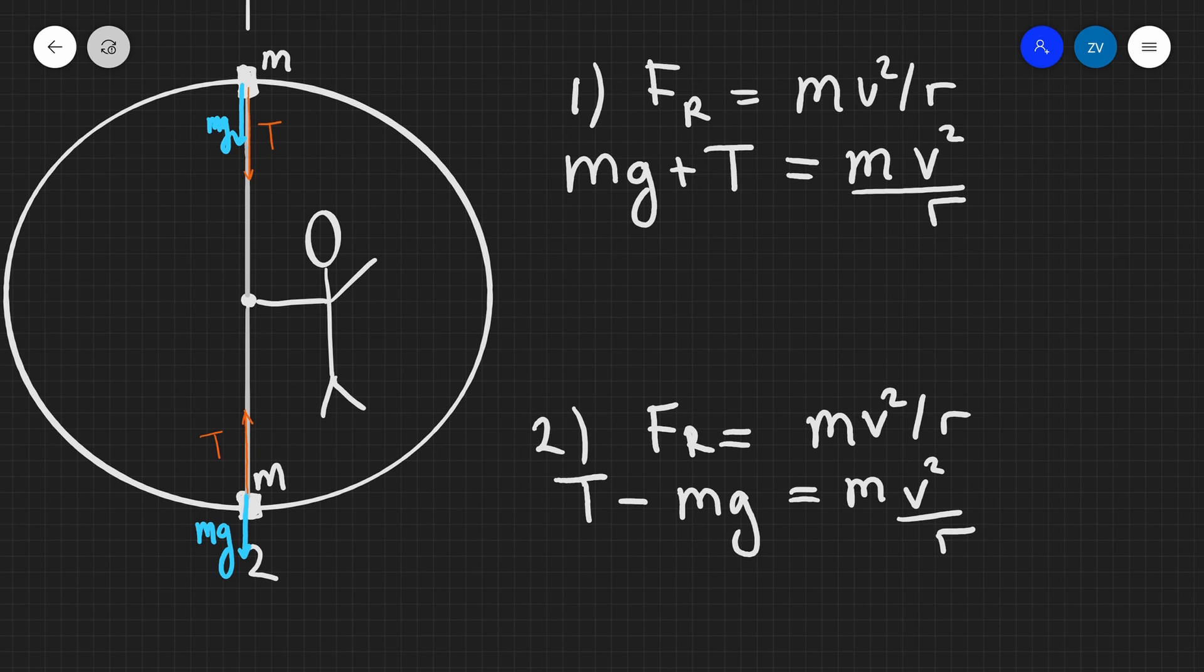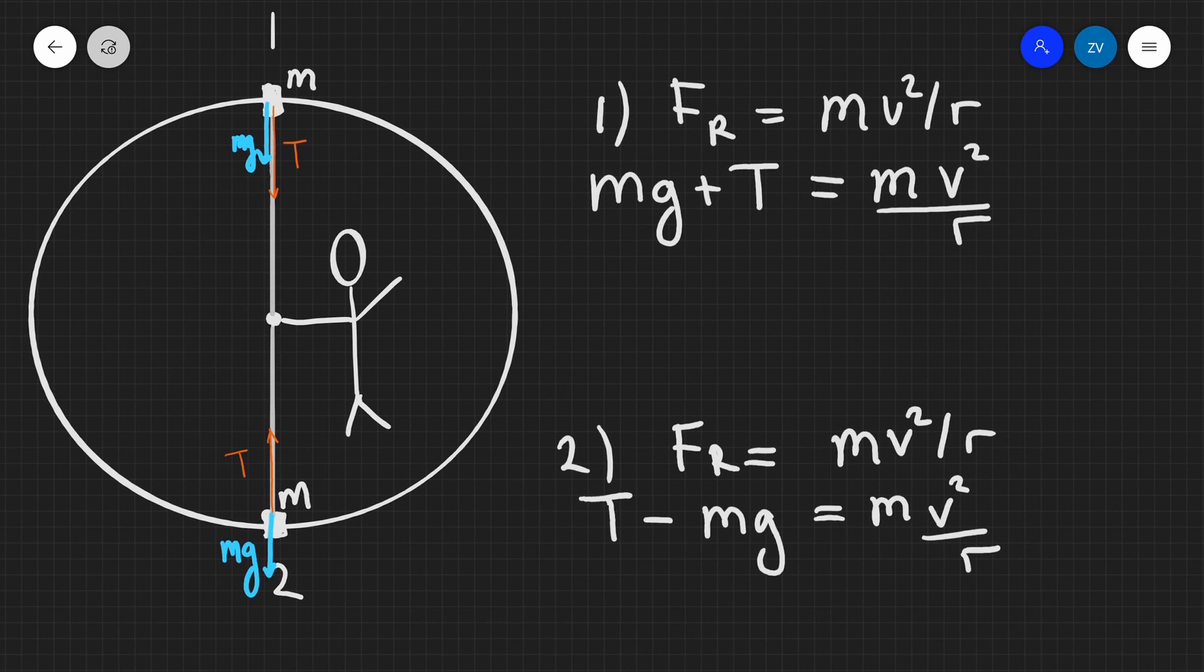Okay, now what we can do is simply rearrange for the tension. So let's go ahead and rearrange for the tension. Let's also give the tension a subscript just to differentiate it. So the tension in position one, let's call that T1 and the tension in position two, let's call that T2. Okay, so just rearranging for T1, we get that T1 will be mv squared over r minus mg.